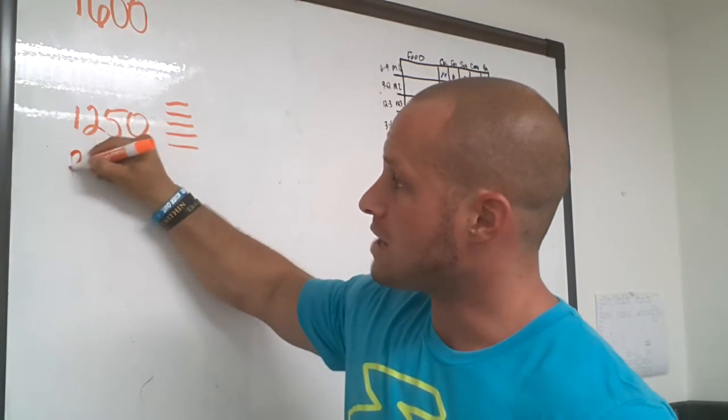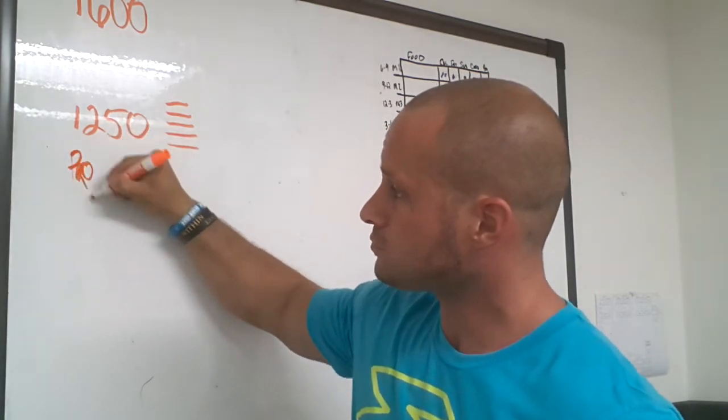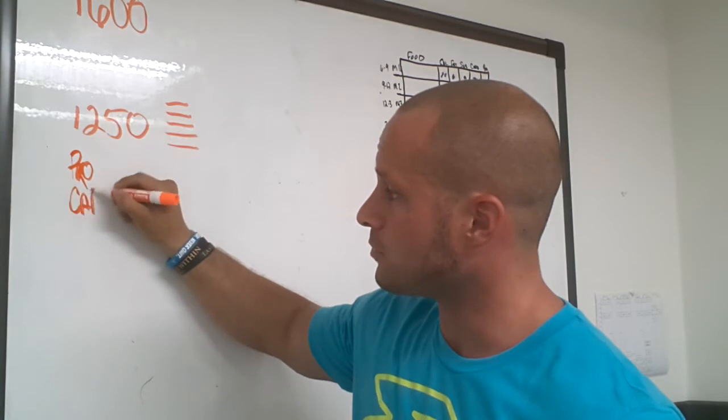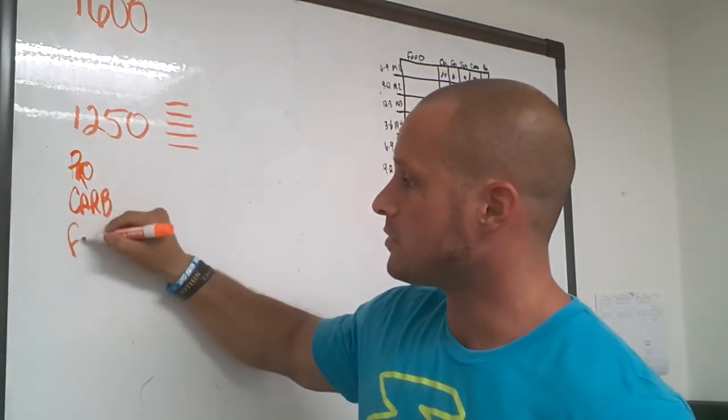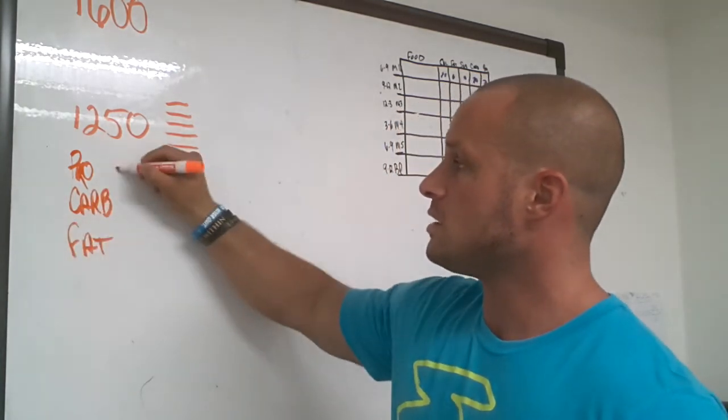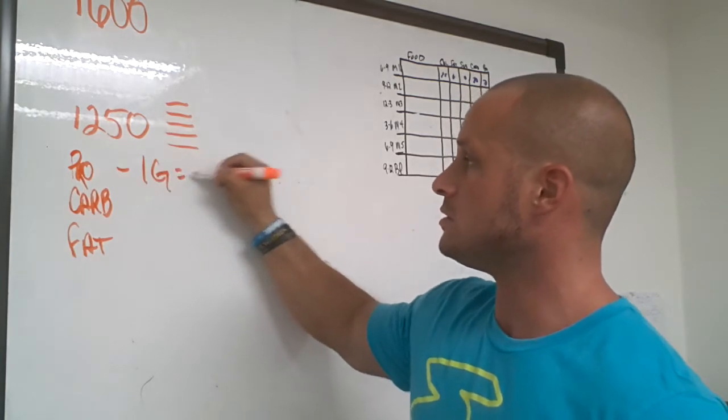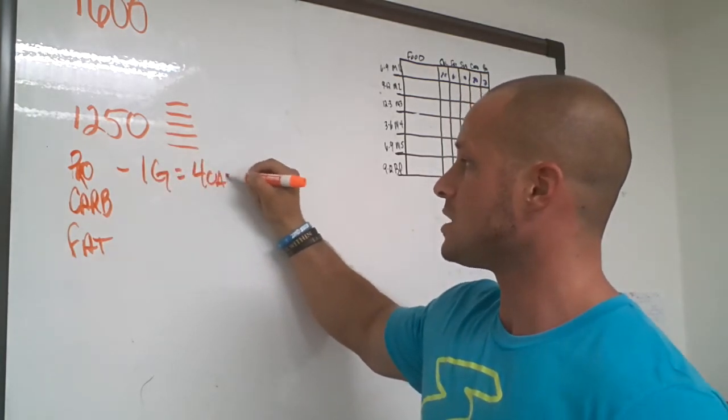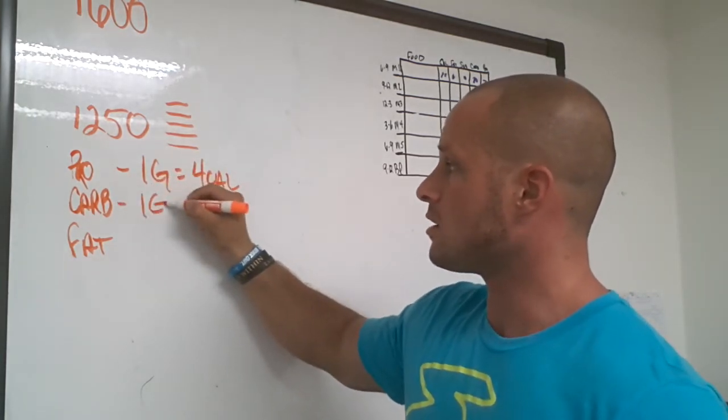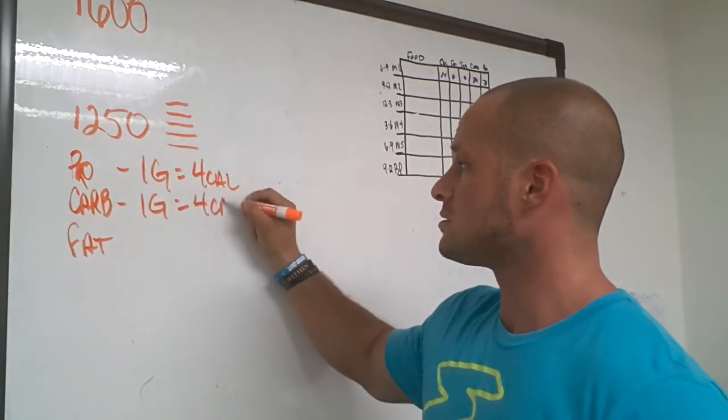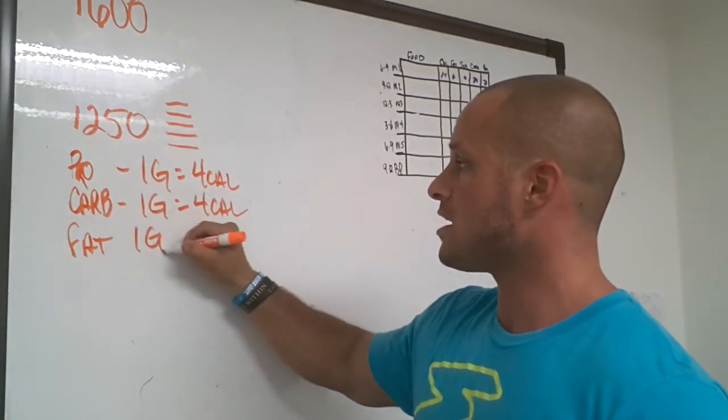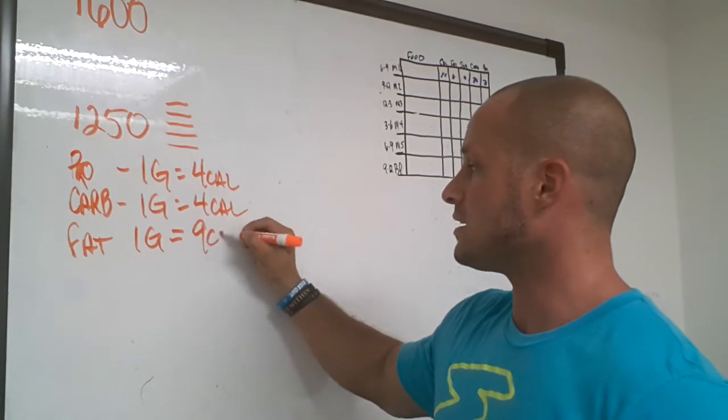Macros are broke down between protein, carbs, and fat. In one gram of protein, you've got four calories. In one gram of carbs, you've got four calories. And one gram of fat, you have nine calories.